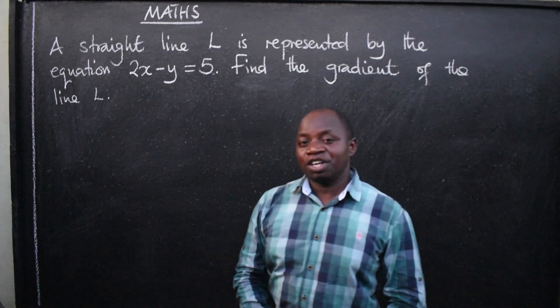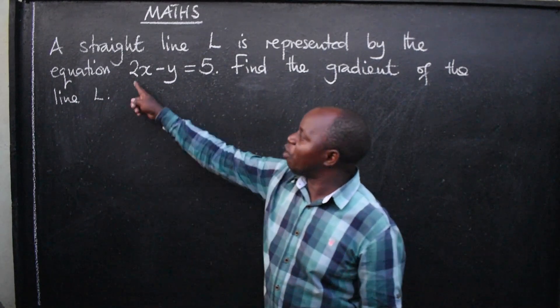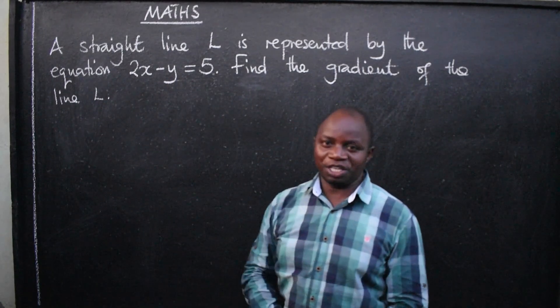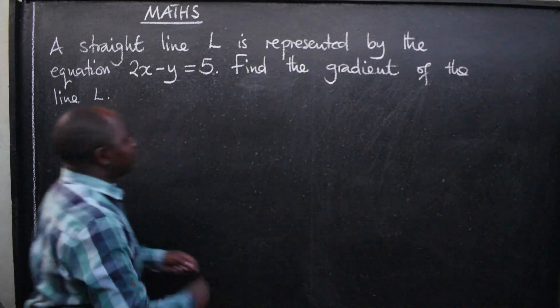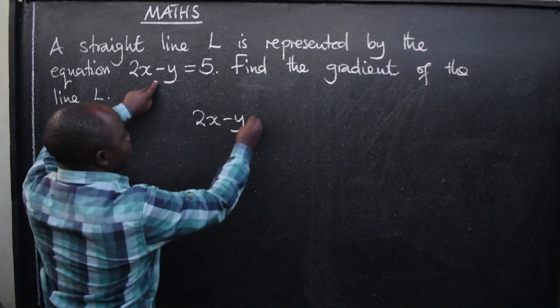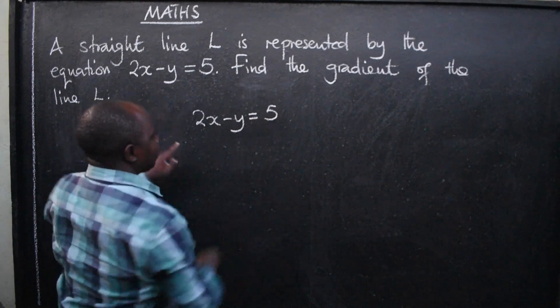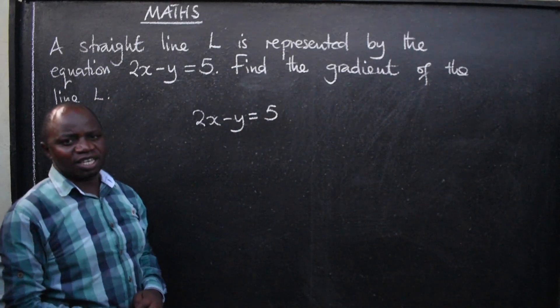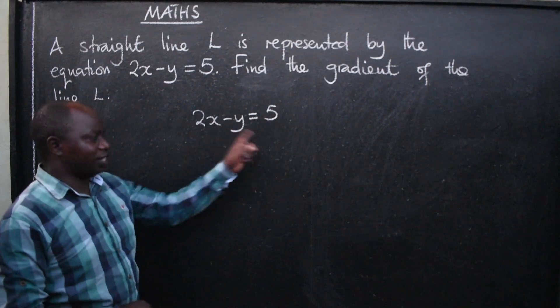In short, they are saying you should find the gradient of this equation. We have 2x minus y equals 5. What is the gradient of this line?